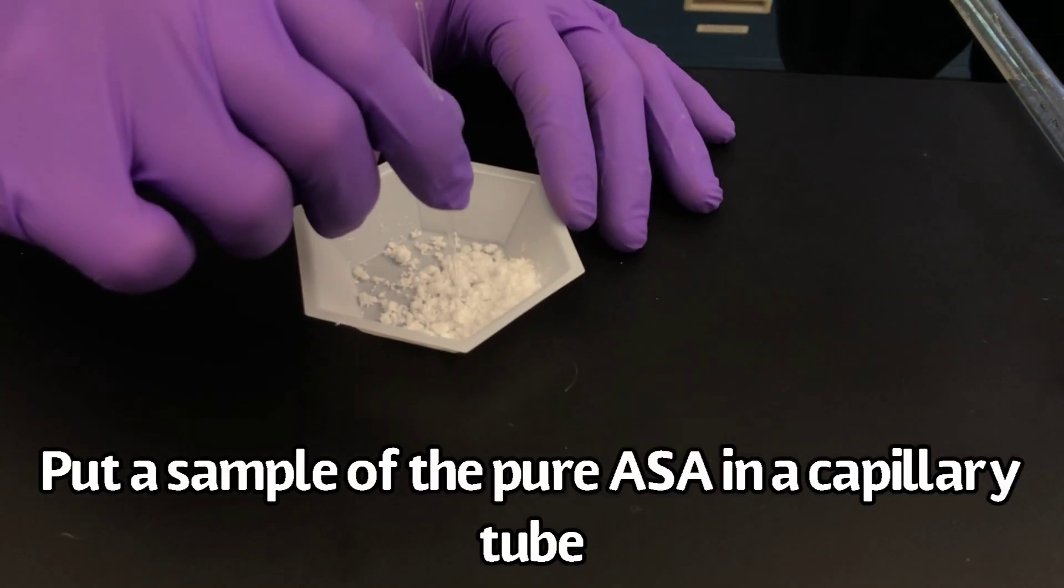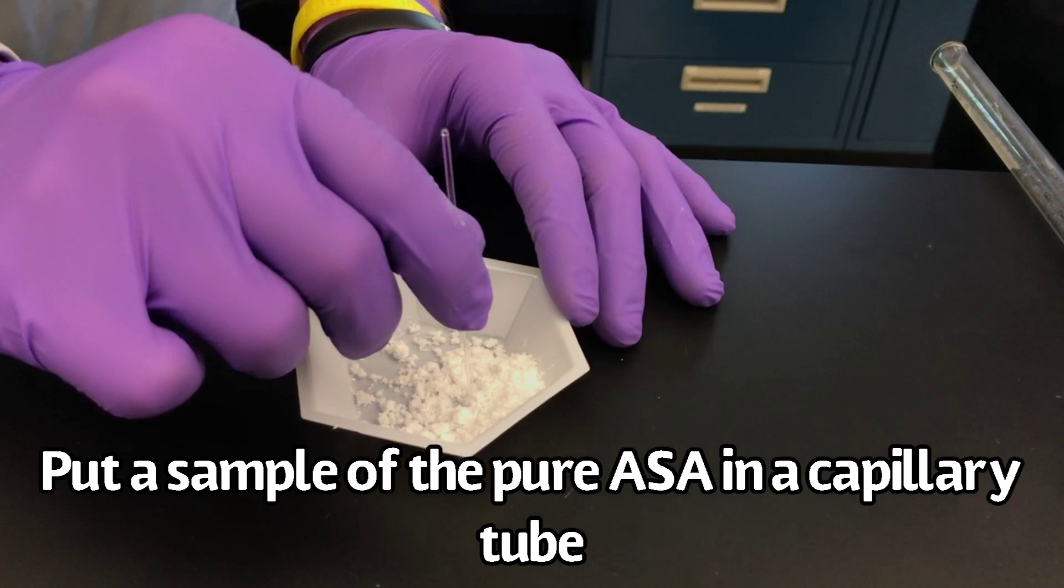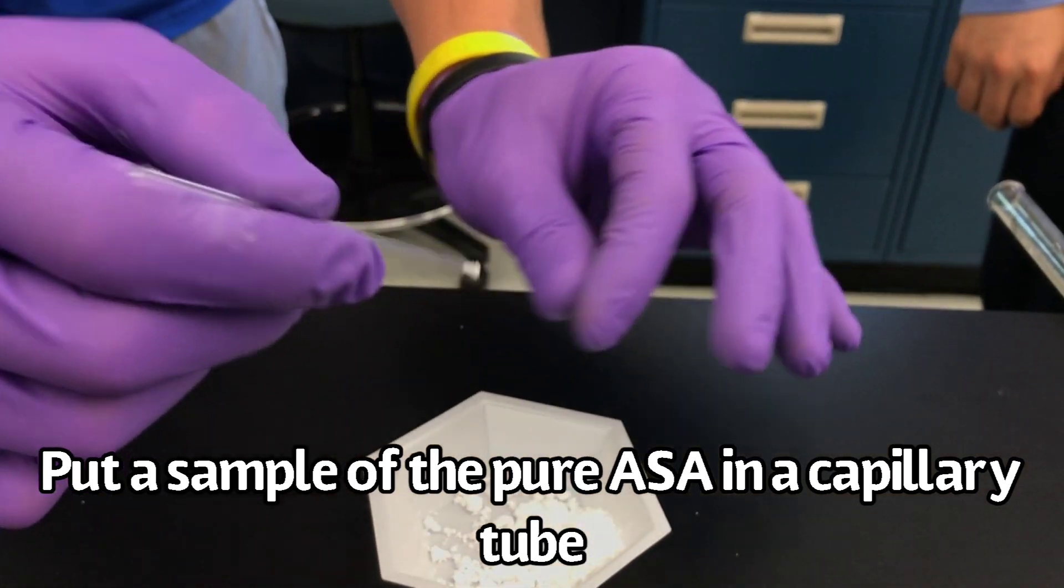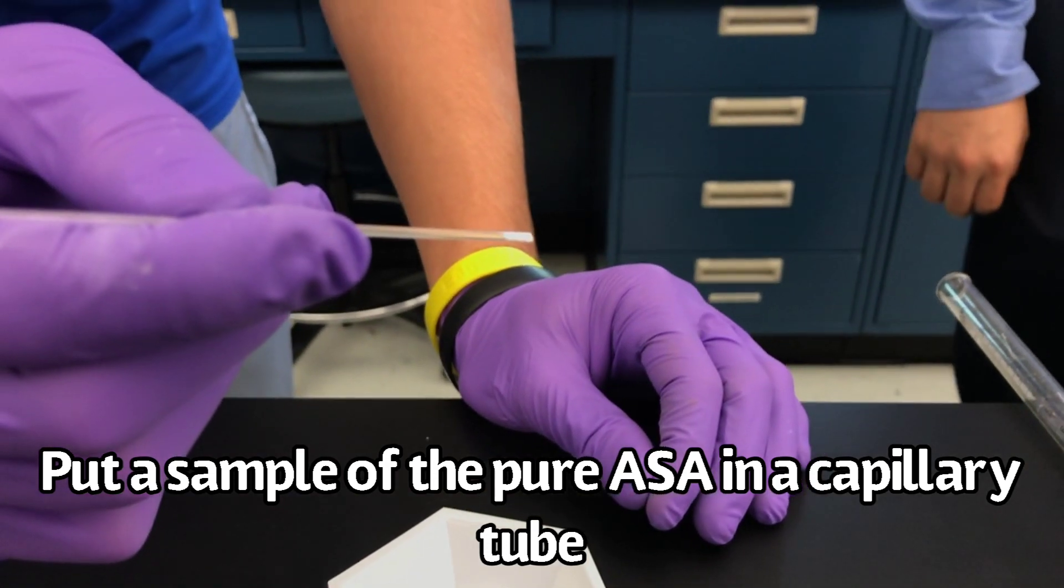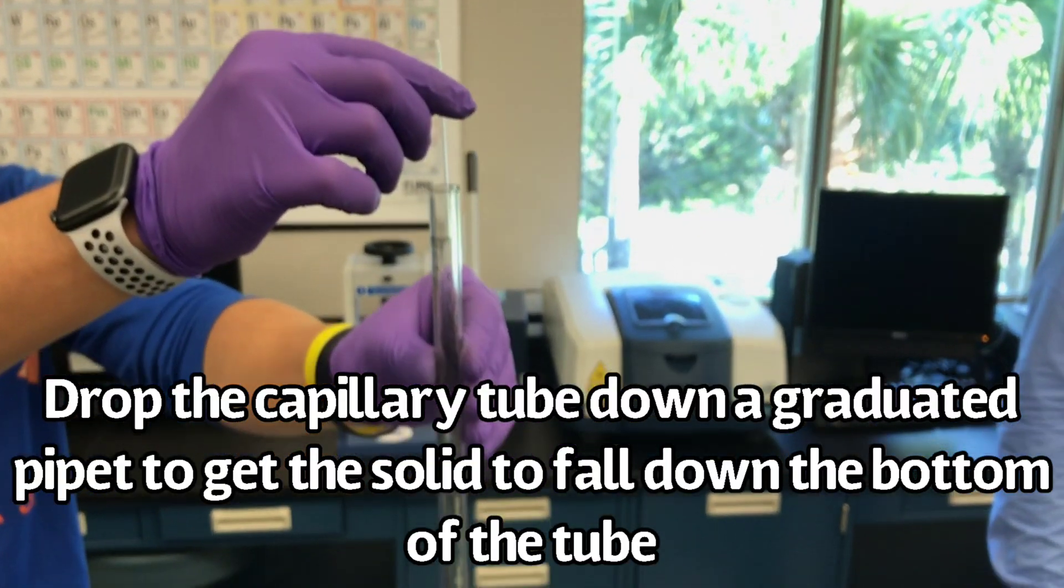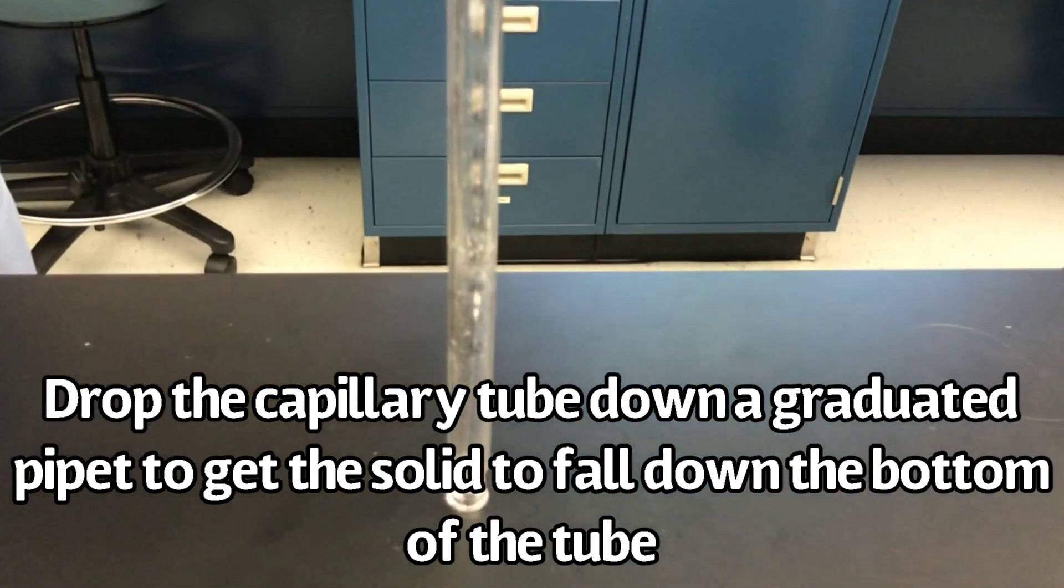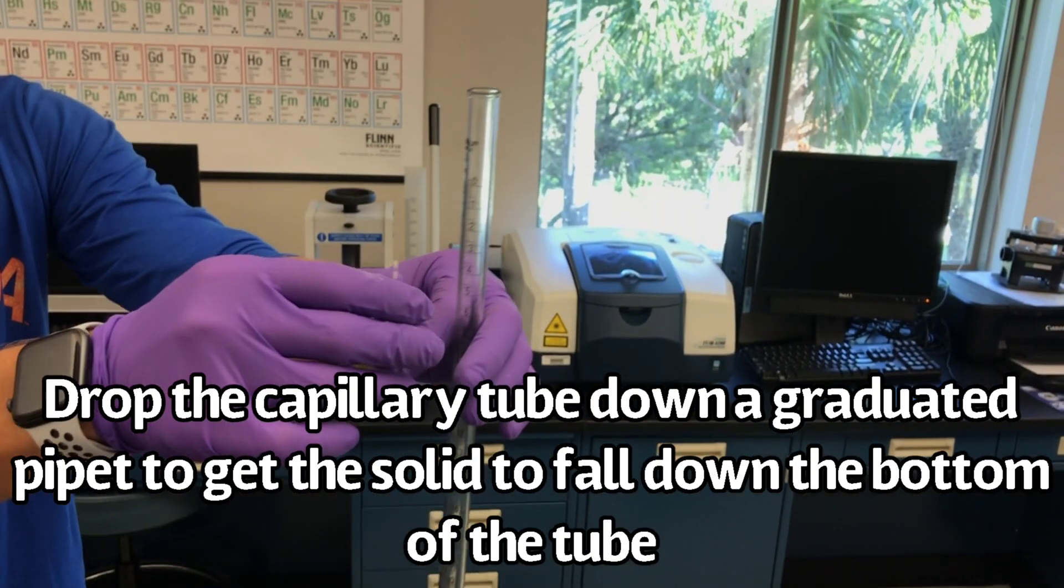Put a sample of the pure acetylsalicylic acid in a capillary tube. Drop the capillary tube down a graduated pipette to get the solid to fall down to the bottom of the capillary tube.